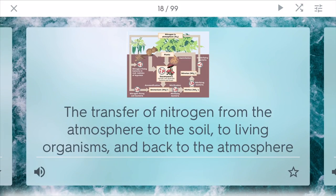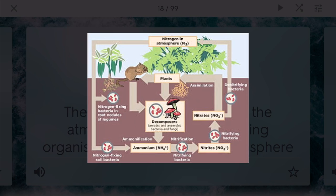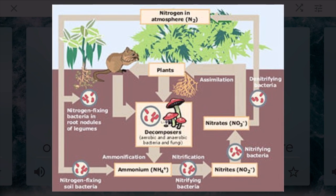The nitrogen cycle is the transfer of nitrogen from the atmosphere to the soil to different types of living organisms such as humans and back to the atmosphere. Nitrogen is available in many different forms — some usable and some not. Nitrogen in the atmosphere isn't directly usable, but different plants and bacteria in the soil can take it in through processes like assimilation, ammonification, and nitrification to make it useful. Plants can then absorb it, and animals or humans can eat these plants to gain the nitrogen they need. Legumes are plants that naturally fix nitrogen — one example is soybeans.